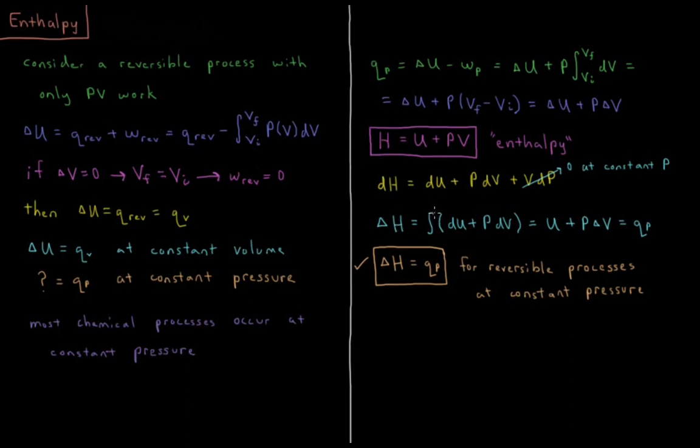Delta H that occurs during some process will be the integral of dU plus PdV. This is going to be equal to delta U plus P delta V, which as we saw up here, is equal to our heat during that reversible process. Delta H equals delta U plus P delta V at constant pressure, which is equal to the heat the system absorbs during that constant pressure process. So for reversible processes that occur at constant pressure, our change in enthalpy between the final and initial states is equal to the heat absorbed by the system.